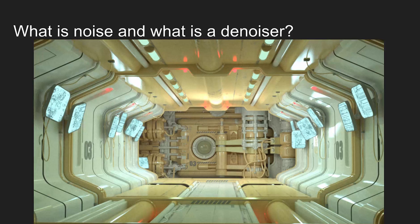In the context of Monte Carlo renders, noise is the small random fluctuations of pixel intensity and colors that you typically get, and it makes our image basically worse. A denoiser is a program that takes such a noisy image and converts it to a much smoother image, while hopefully preserving all the detail and not ruining the image in any way.